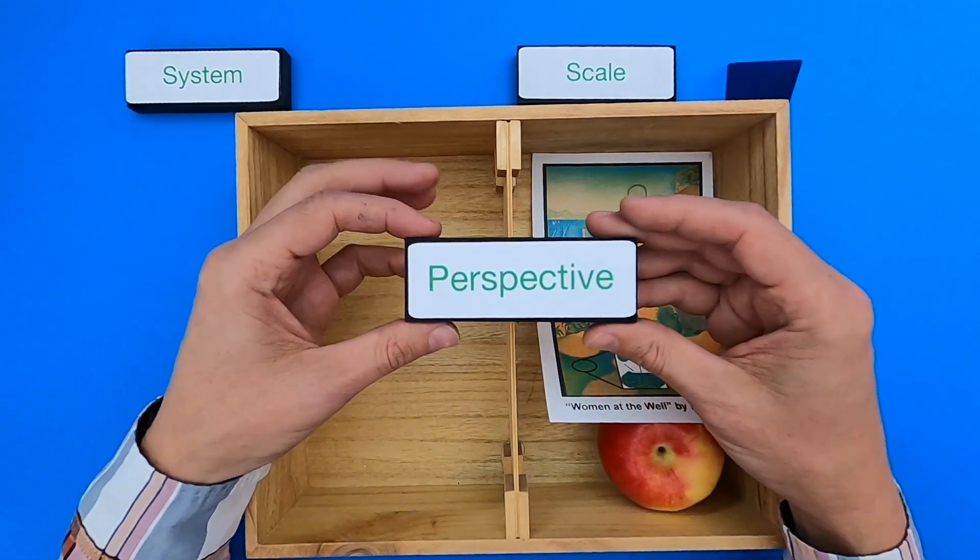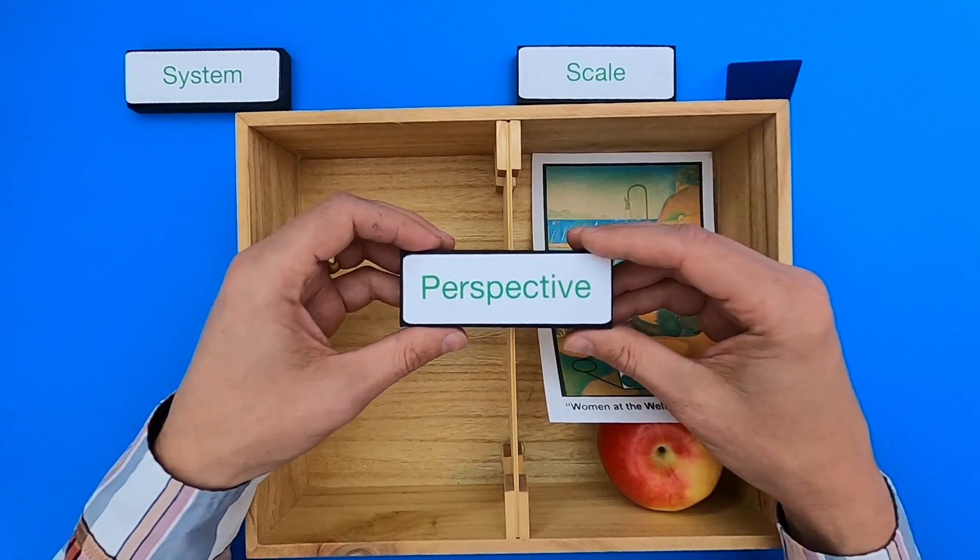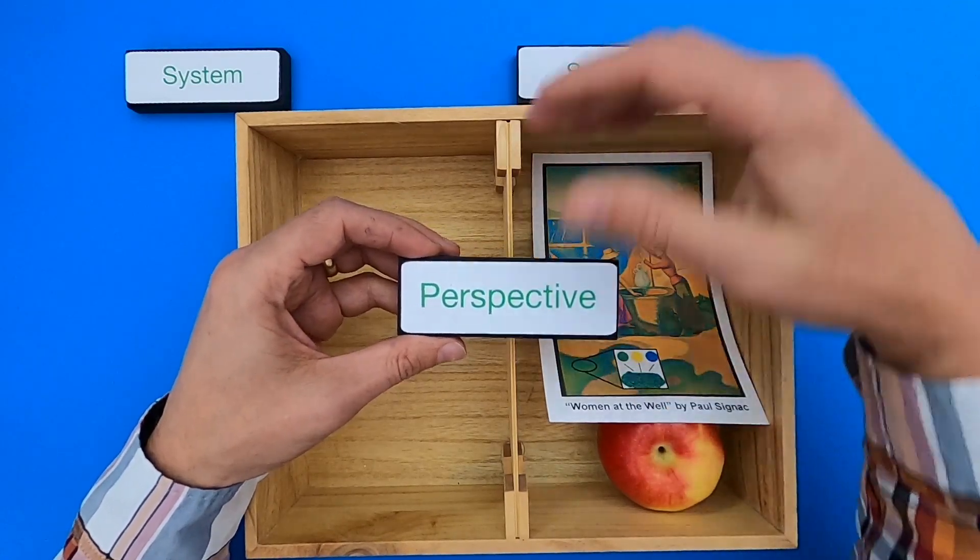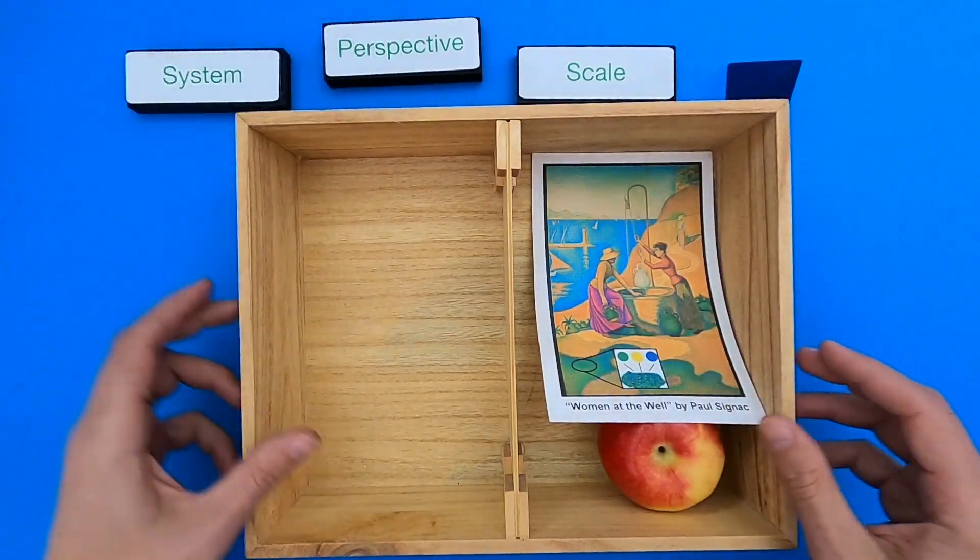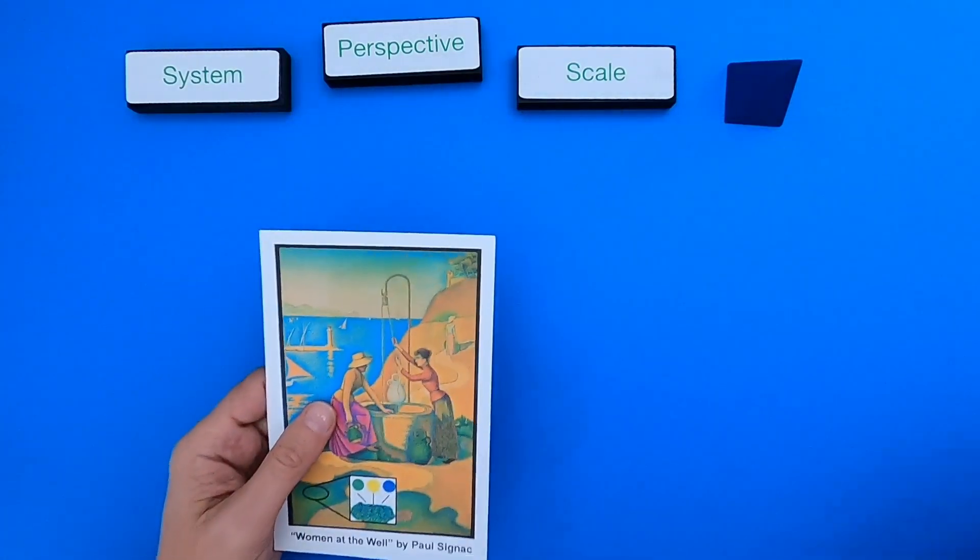So what is perspective? It requires an observer. It's what we see at a specific scale within a system. So let me clear this out of the way and get started with this painting.